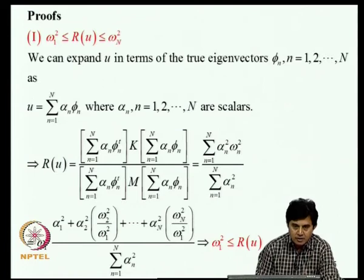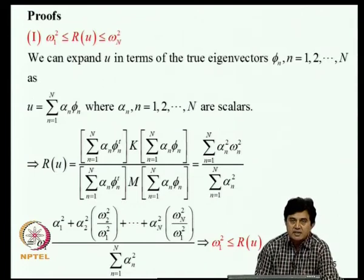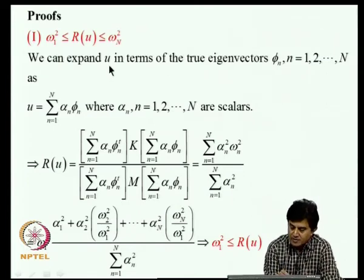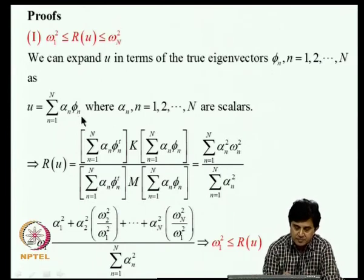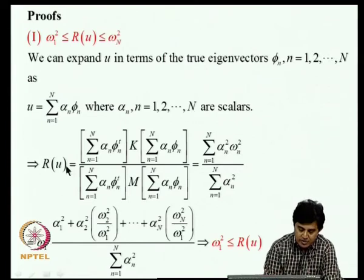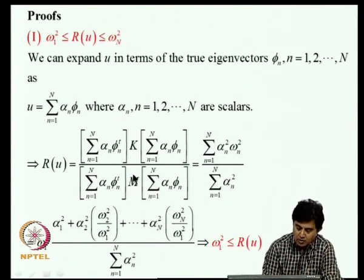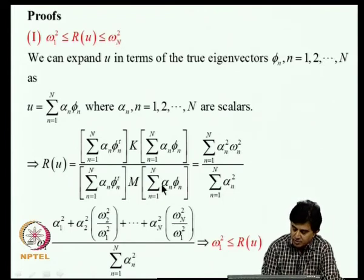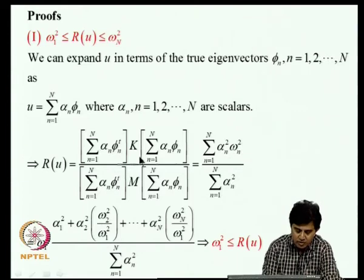Mathematically, the bounding result is shown by expanding the arbitrary vector U in terms of the true mode shapes: U = sum of alpha_N * phi_N. Using orthogonality with respect to K and M (with mass normalization), all cross terms vanish. The numerator becomes sum of omega_N^2 * alpha_N^2 and the denominator is sum of alpha_N^2. Pulling out omega_1^2 from the numerator shows that the remaining terms are all greater than or equal to 1, establishing the lower bound R(U) >= omega_1^2.